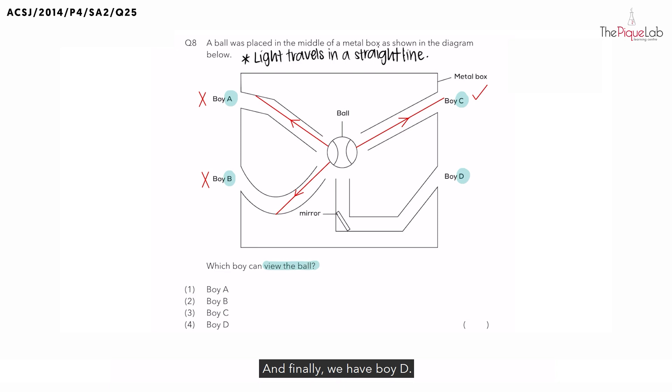And finally, we have boy D. Now boy D, we have light reflected off the ball, which travels through a mirror, and light will then be reflected off the mirror, but it will get blocked by the metal box once again. So is boy D able to see the ball? No.